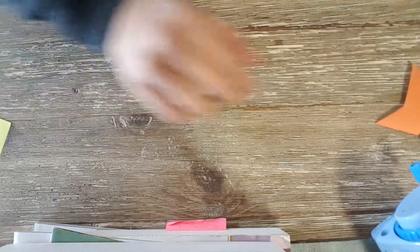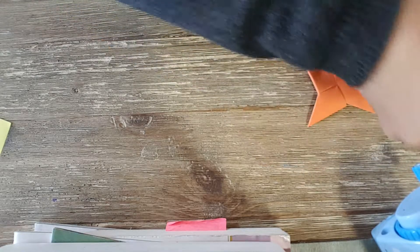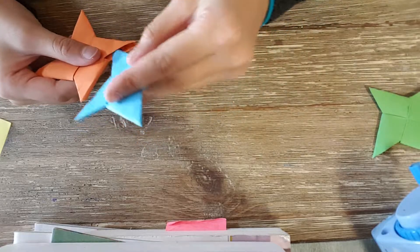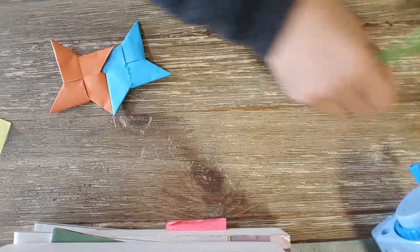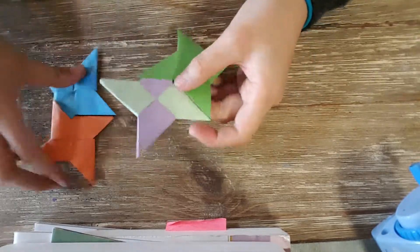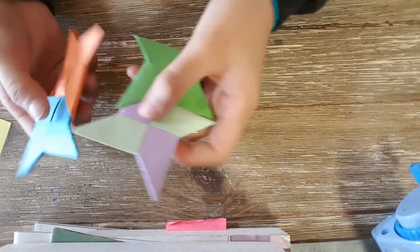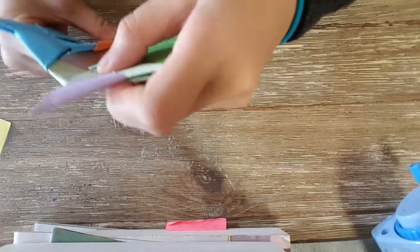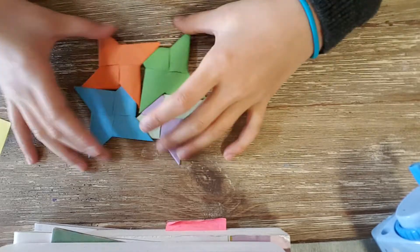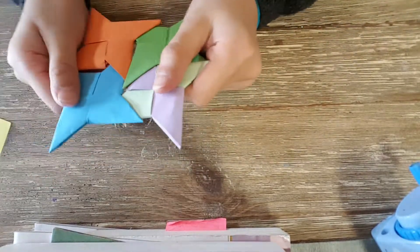Also, if you take two pieces and put them together like this, and take another two pieces and put them together like this, and you stick the two pieces that you made together, you can make a ninja star that has four miniature ninja stars in it.